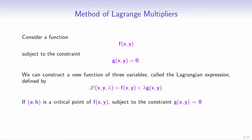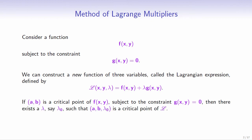If (a, b) is the critical point of f subject to the constraint g equals 0, then there exists a lambda, say lambda naught, such that (a, b, lambda naught) is a critical point of L. The converse is also true.